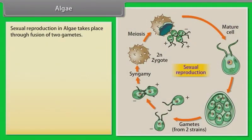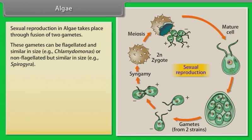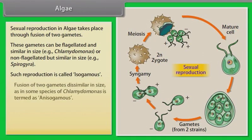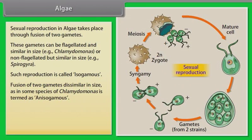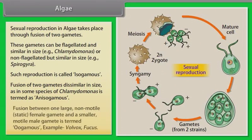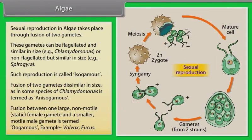Sexual reproduction in algae takes place through fusion of two gametes. These gametes can be flagellated and similar in size, example chlamydomonas, or non-flagellated but similar in size, example spirogyra. Such reproduction is called isogamous. Fusion of two gametes dissimilar in size as in some species of chlamydomonas is termed as anisogamous. Fusion between one large non-motile static female gamete and a smaller motile male gamete is termed oogamous, example volvox, fucus.